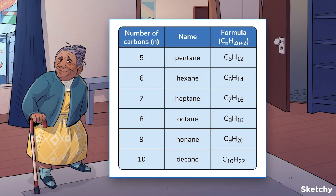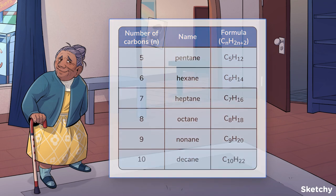As we look at longer carbon chains, the names start using the Greek prefixes you'll recognize from the names of polygons. A 5-carbon chain is pentane, like pentagon. A 6-carbon chain is hexane, like hexagon. You get the idea. These naming conventions exist for alkanes all the way up to over 100 carbons long, but it's unlikely that you'll ever have to remember the word nonadecahectane.